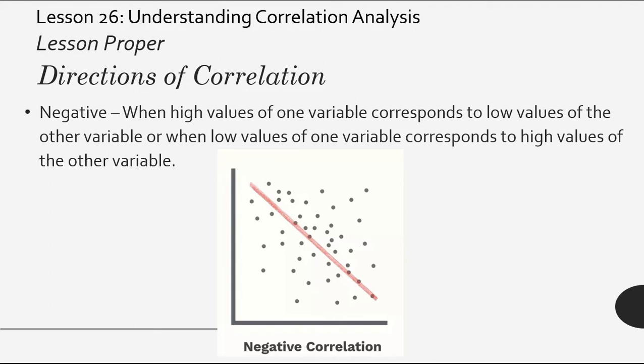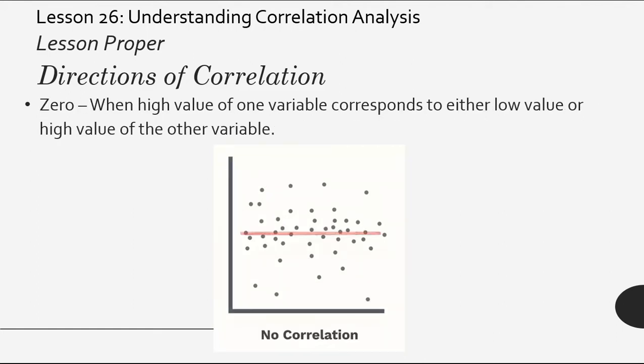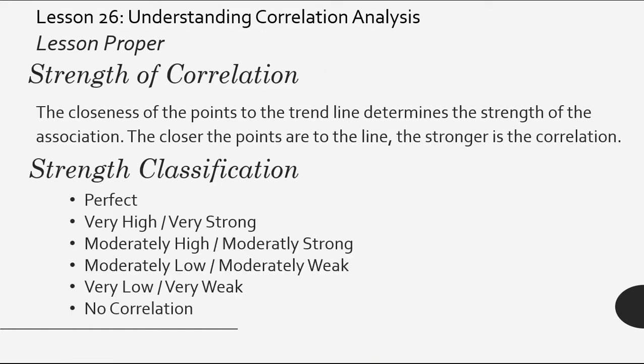If earlier we had positive, then negative, now we have zero correlation. Zero correlation exists when high values of one variable corresponds to either low or high value of the other variable. If you notice its trendline, almost all of this depends on the trendline, the appearance of the trendline. We'll discuss trendline later. For now, if earlier we had direction, now let's talk about strength.